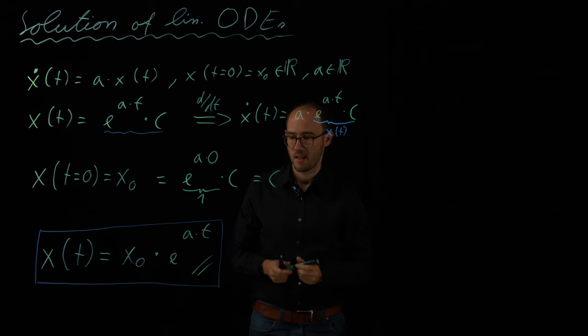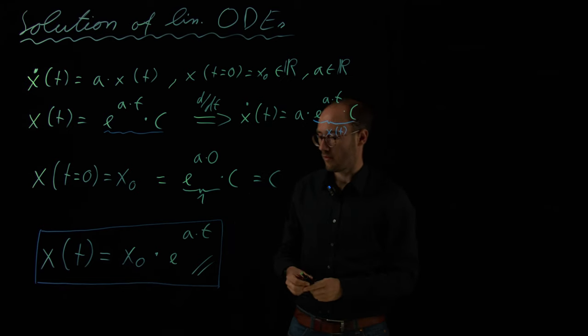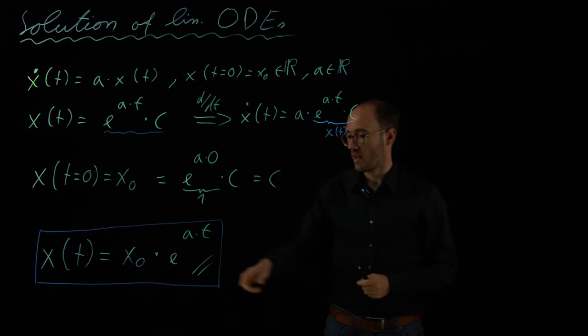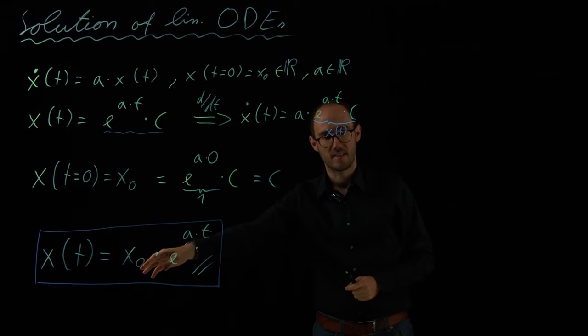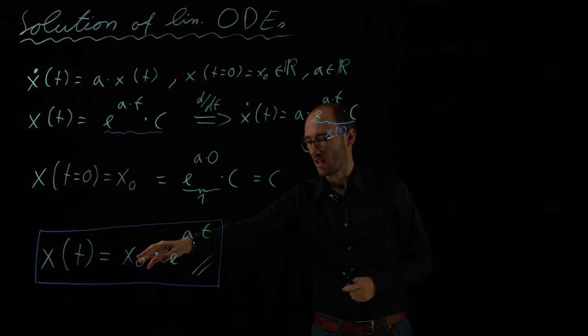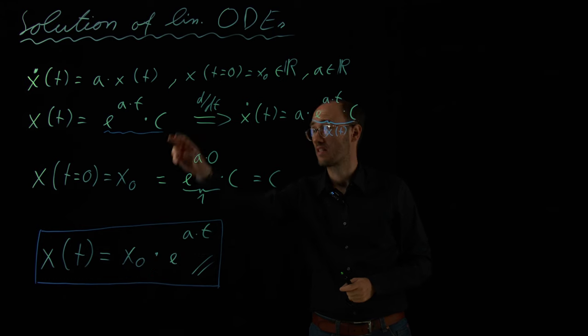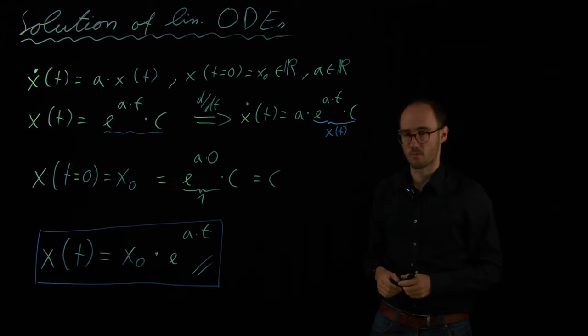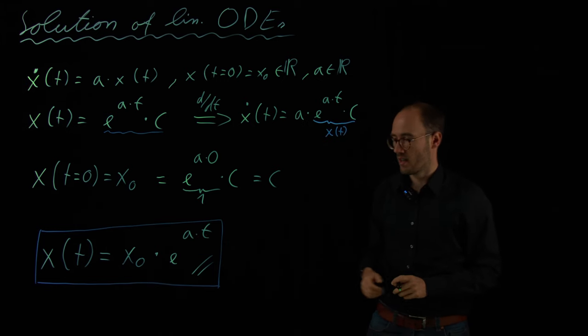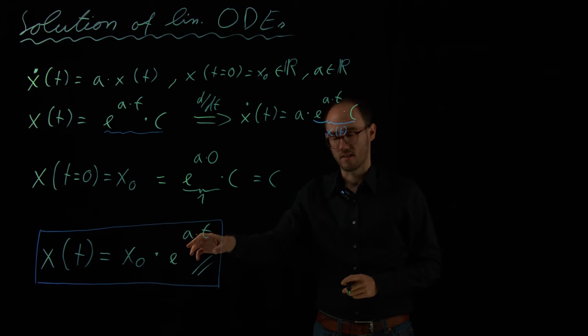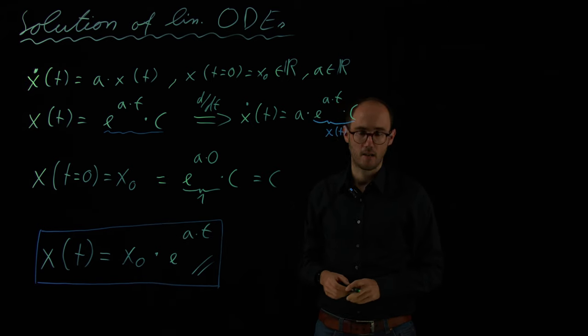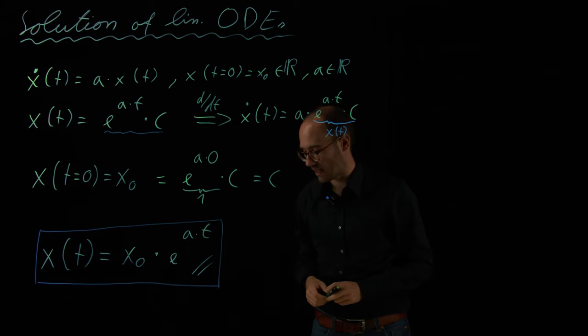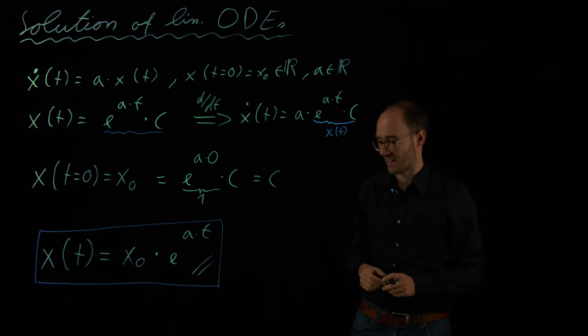So, what does that mean is actually that, if we have this model describing the dynamics of some system, and we know the starting state x zero, which is basically the only information which we need besides the model structure, then we know that this is a so-called time response or system response in the time domain. And we can qualitatively evaluate this time response with respect to the parameter A, which can basically have three distinct cases.